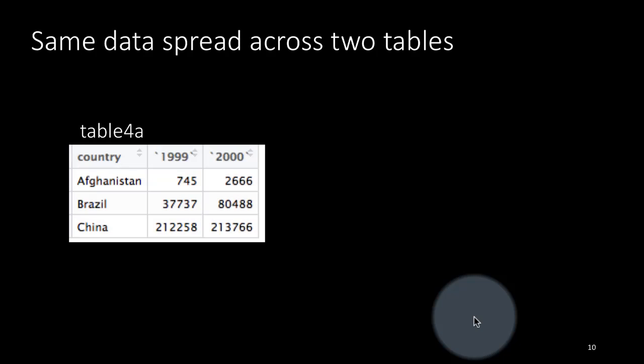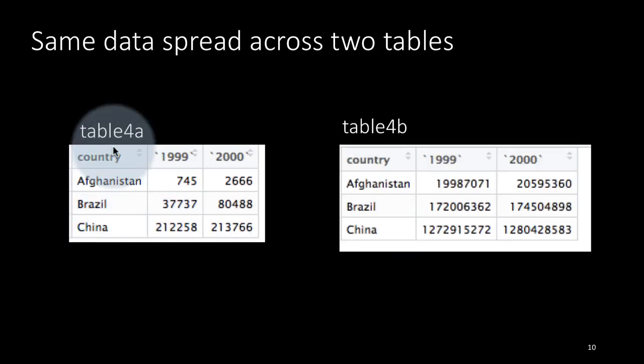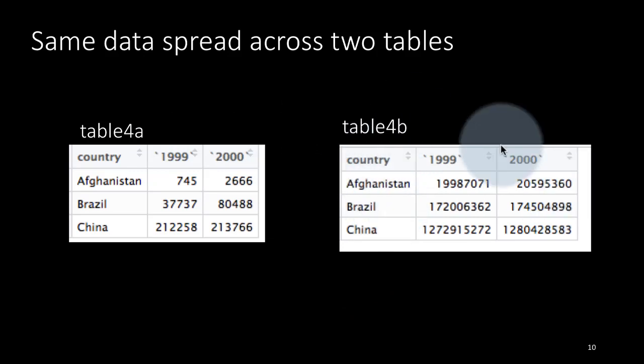And finally, you can have even the same data spread across two tables. So you've got the data for 1999-2000, the cases data. So for each country, you've got the cases and the years have now gone into columns. And you've got another table which is giving you the population data for the same thing.